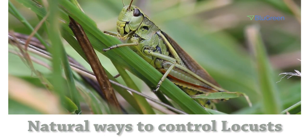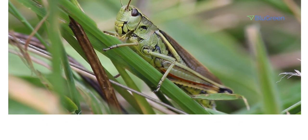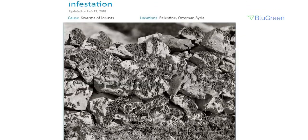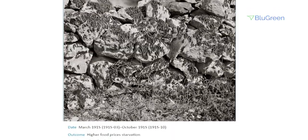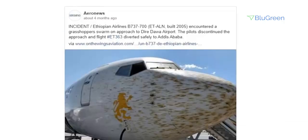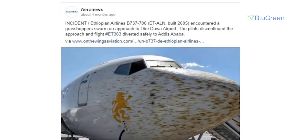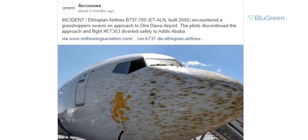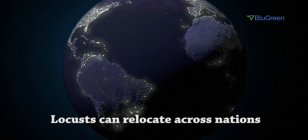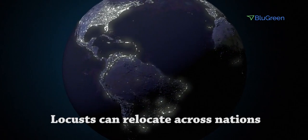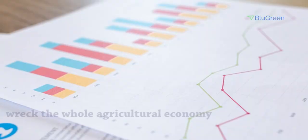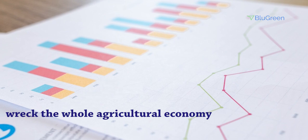Locusts are species related to the grasshopper family. There is a long history of locust outbreaks across the world, which has caused several problems. Even flights have been diverted due to locust swarms in recent times. Locusts can relocate across nations and cause extraordinary harm to crops, thereby wrecking the whole agricultural economy.